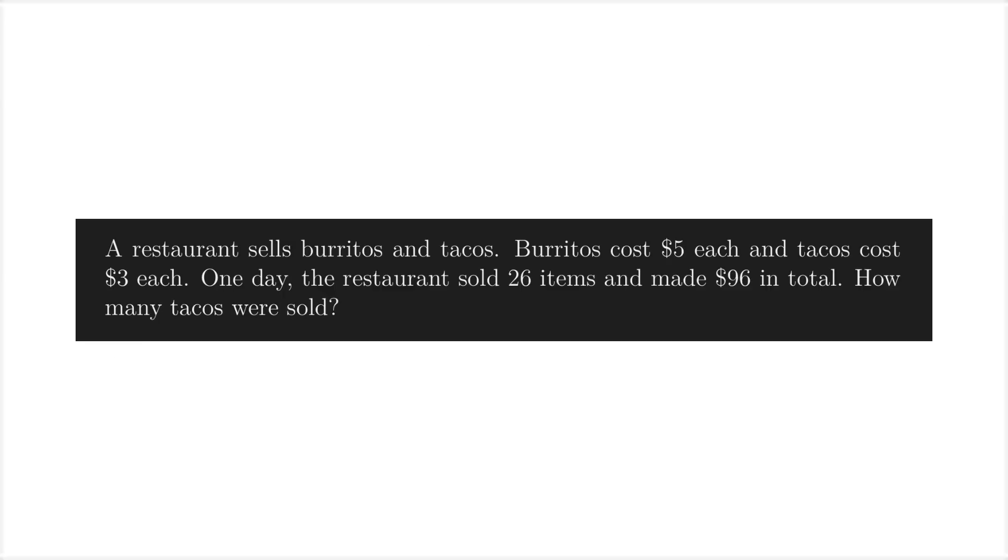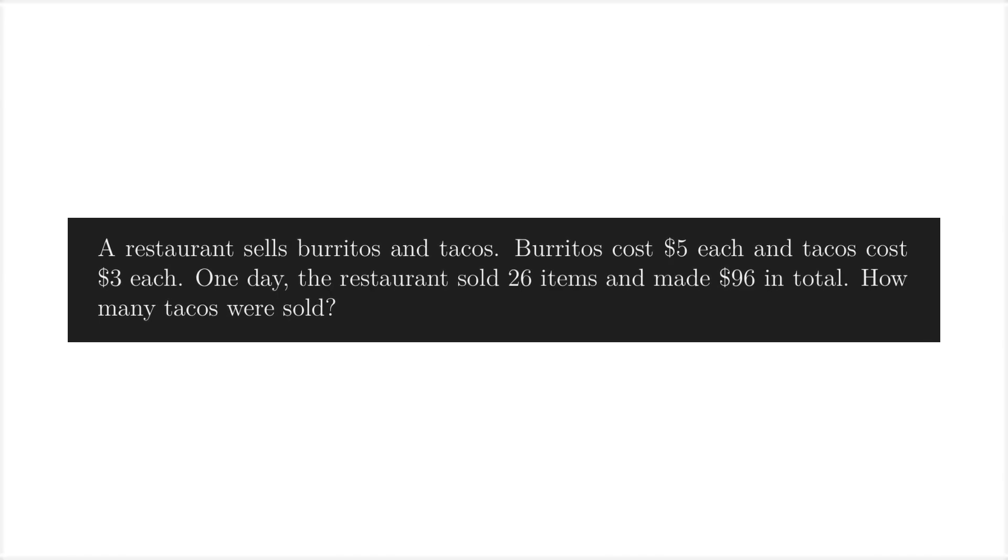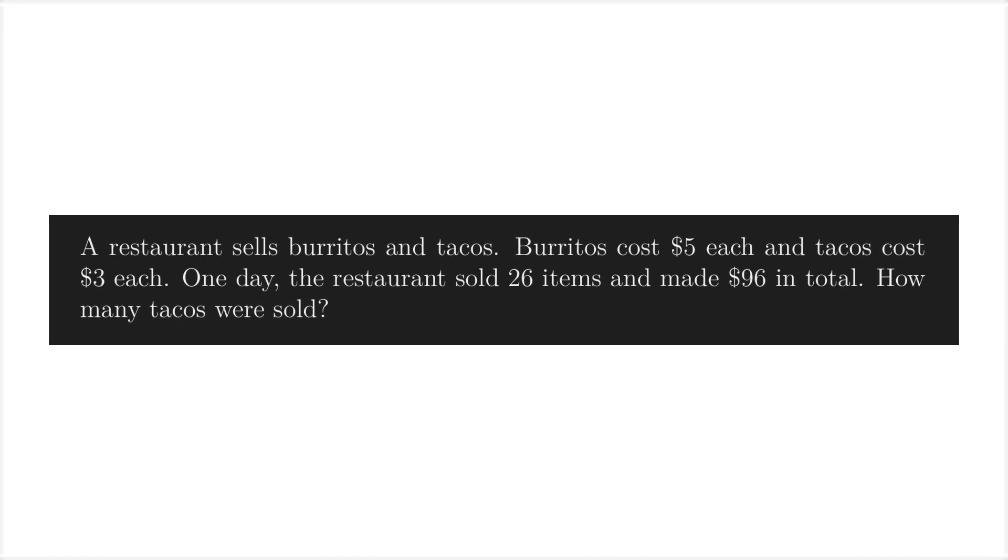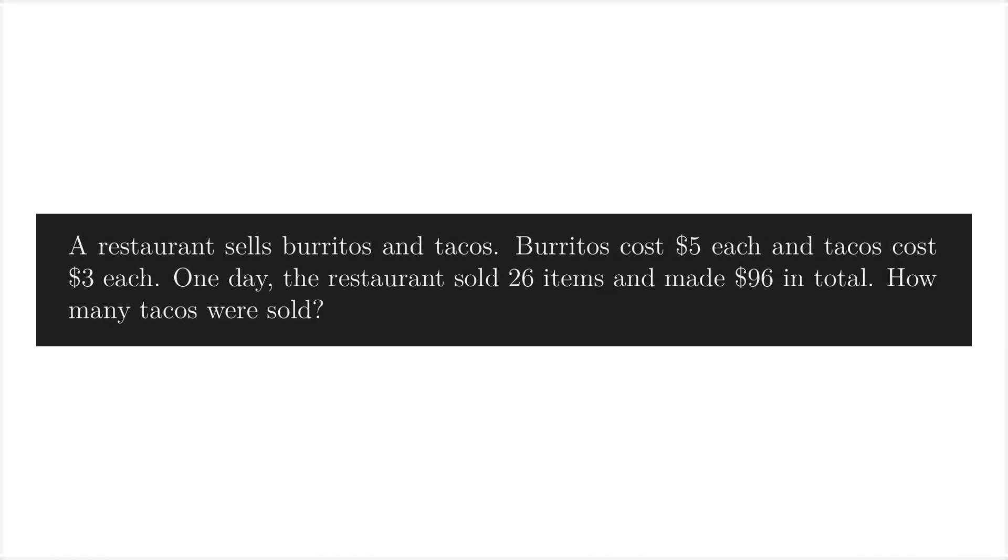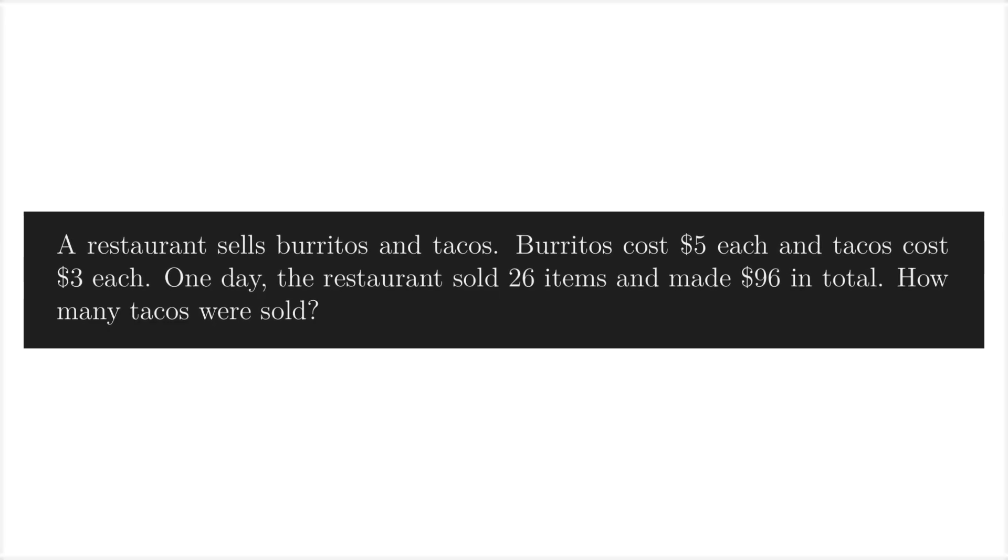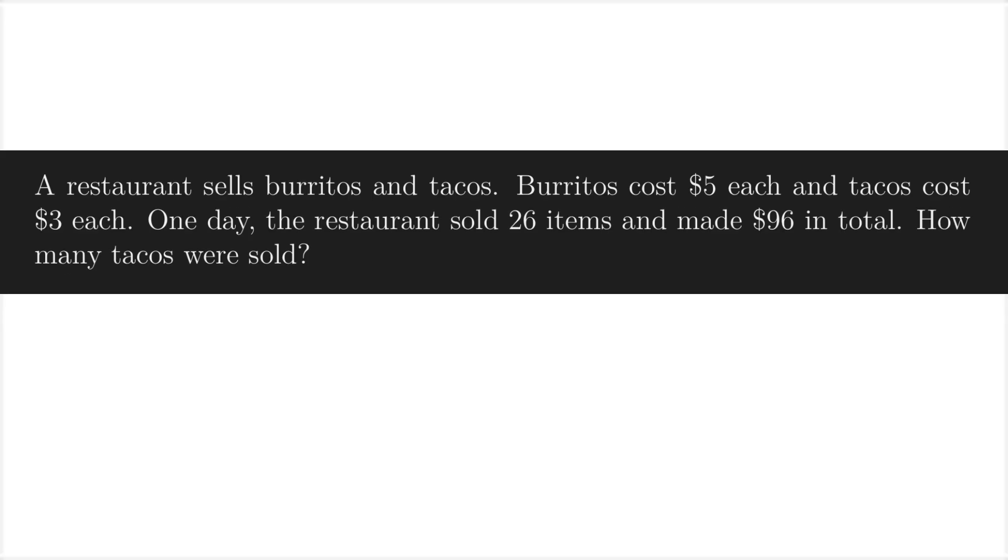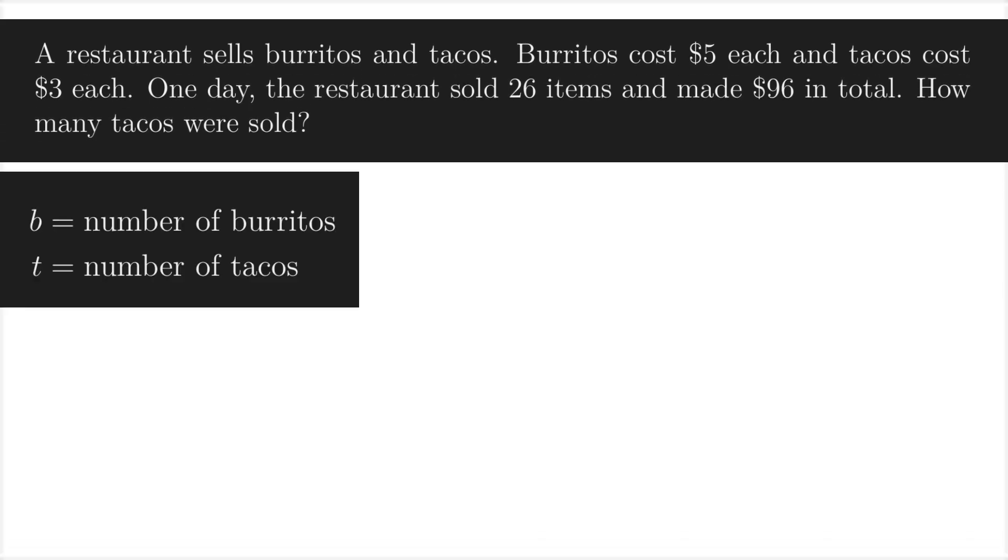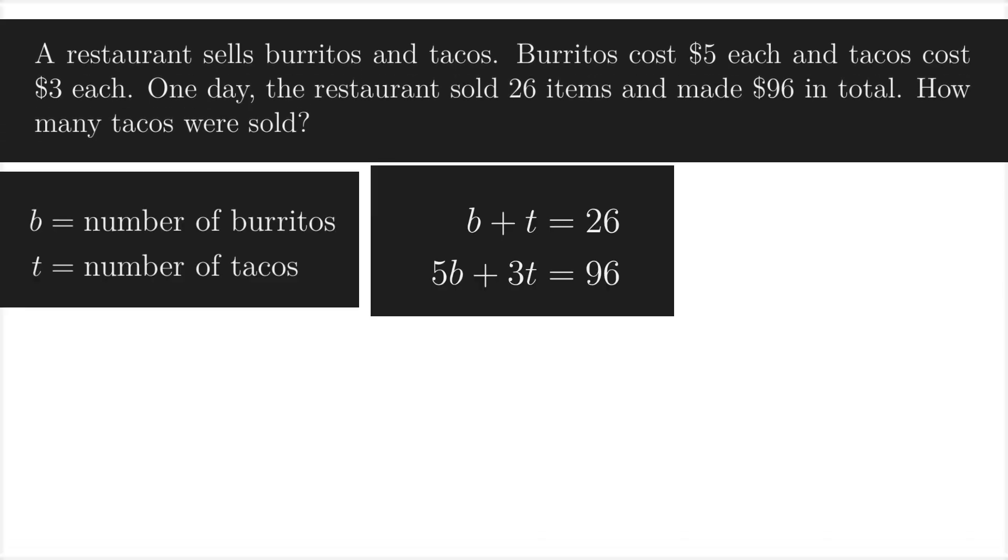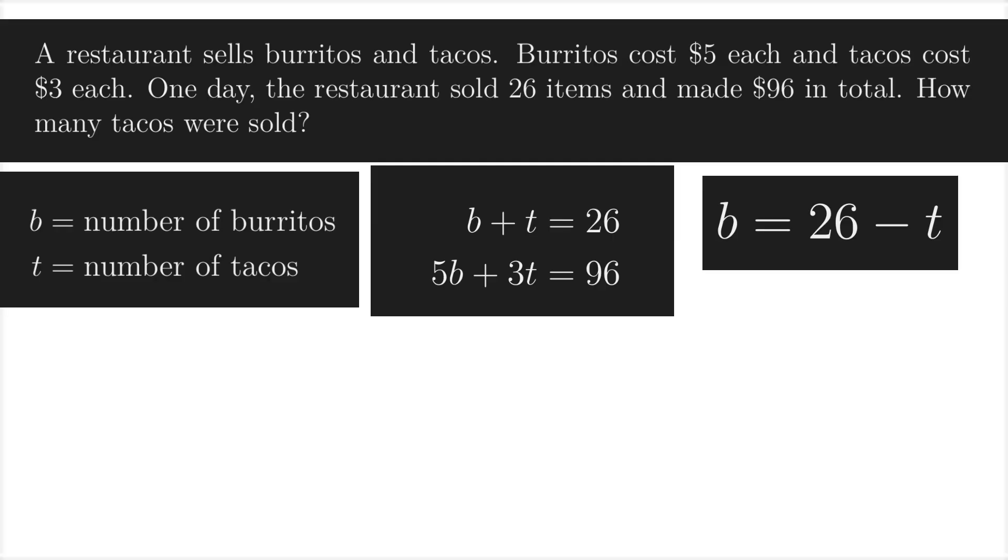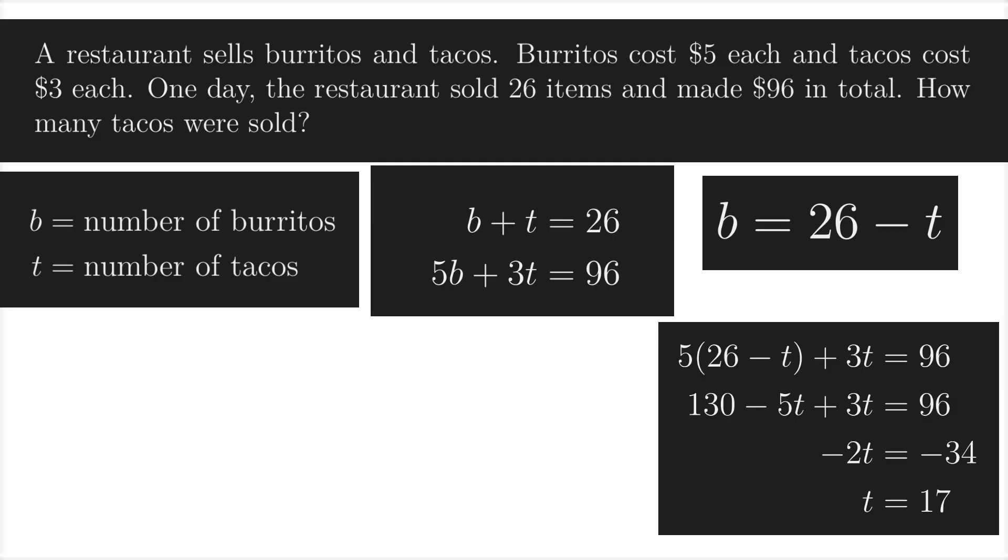A restaurant sells burritos and tacos. Burritos cost $5 each, and tacos cost $3 each. One day, the restaurant sold 26 items and made $96 in total. How many tacos were sold? Let's give each food item a variable and set up a system. The top equation can be solved for B. After, we can plug in that B value to the bottom equation and solve for T.